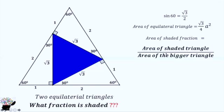Now, to find the fraction, we take the area of the shaded triangle—the blue triangle—divided by the area of the bigger equilateral triangle.